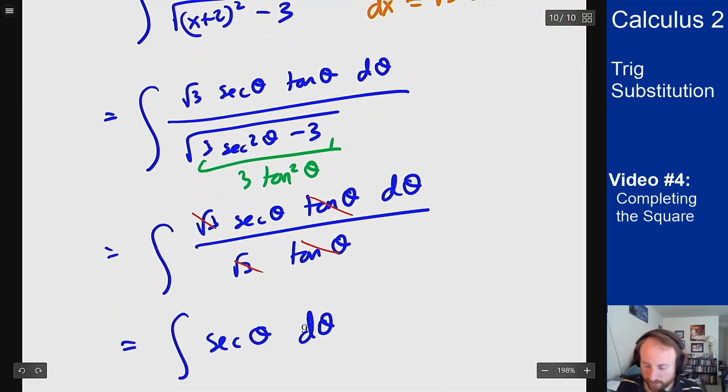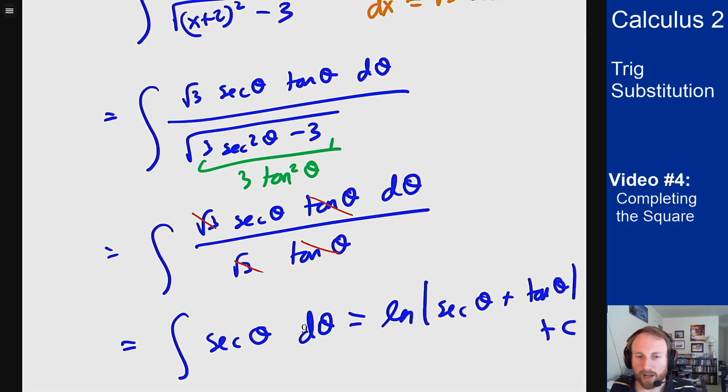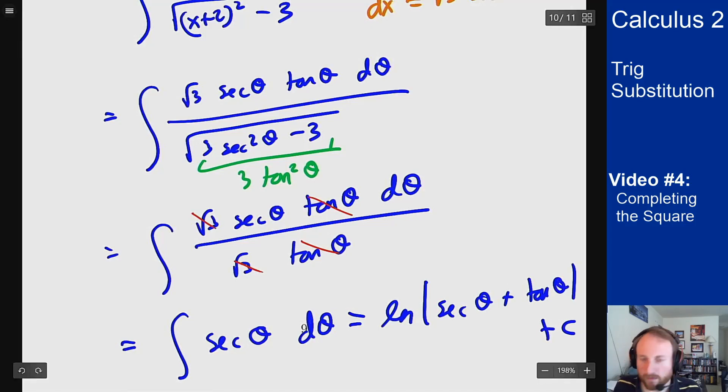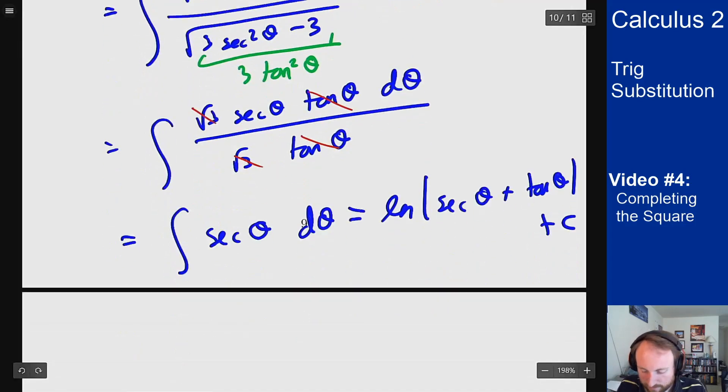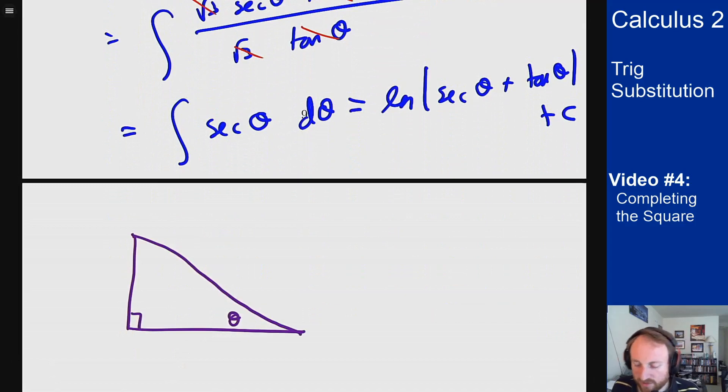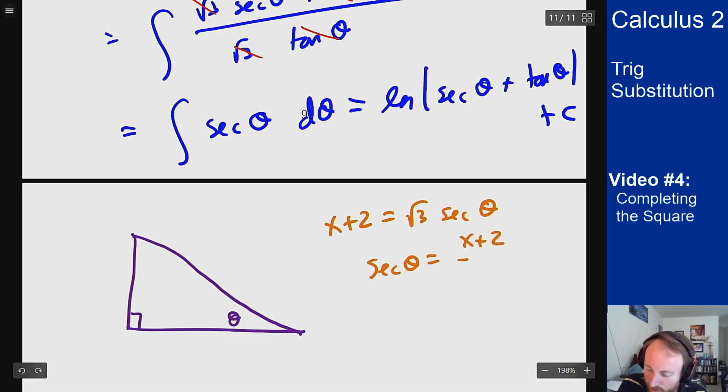Which we have a formula for. That's just log of secant theta plus tangent theta plus c. Now I have to convert this back into x's. To do this we again want a triangle. But what was our substitution? Our substitution was that x plus 2 was root 3 secant theta. So what this means is secant theta is x plus 2 over root 3 and secant is hypotenuse over adjacent.